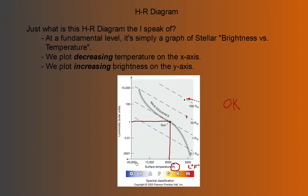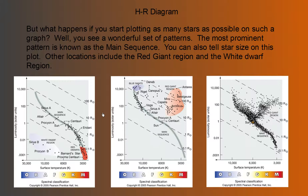So first off, let's notice where our sun is on here. Our sun is one solar luminosity, so it's right in line with that, and its surface temperature is about 6,000 Kelvin — a little bit less — so it's right about there. A 3,000-degree star that's not very bright might be about here. A 3,000-degree star as bright as our sun would be about here. A 3,000-degree star 10,000 times as bright as our sun would be here. Stars do inhabit these other areas, but they represent different parts of a stellar life cycle.